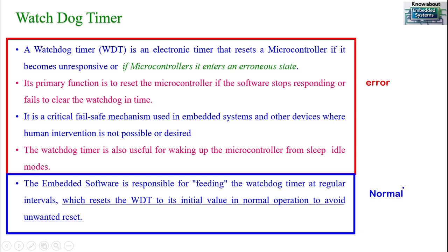When the microcontroller is operating normally, the software programmer — the embedded software — is responsible for feeding the watchdog timer and properly configuring it. The embedded software is responsible for feeding the watchdog timer at regular intervals, which resets the watchdog timer back to its initial value. The watchdog timer should reset only whenever there is an error; resetting the microcontroller is the responsibility of the watchdog timer.